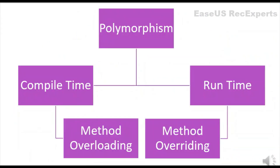Polymorphism means having many forms. In simple words, it is the ability of a component to behave differently in different situations. It allows us to define one interface and have multiple implementations for the same. Polymorphism is of two types: compile time and runtime. Compile time polymorphism is achieved through method overloading, and runtime polymorphism is achieved through method overriding.